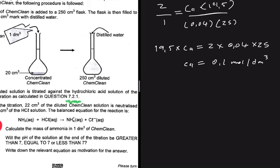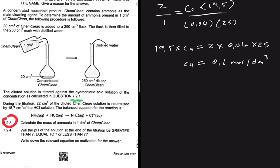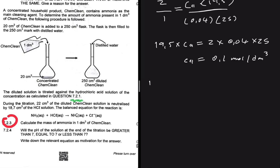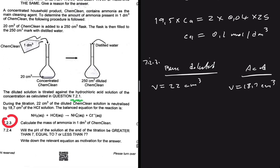In 7.2.3, we need to calculate the mass of ammonia in one decimeter cube of Chem Clean. Let's jot down the information we have. During the titration, 22 centimeter cube of the diluted Chem Clean is used for the diluted base. It is neutralized by 18.7 centimeter cube of HCl, and the concentration of the HCl is the same as calculated in 7.2.1, which is 0.1 moles per decimeter cube.